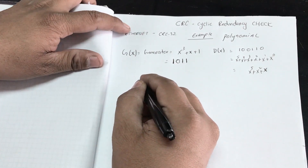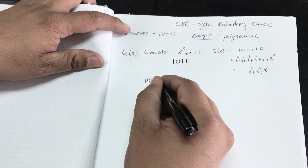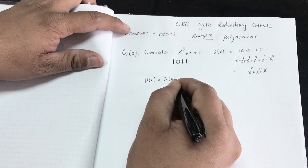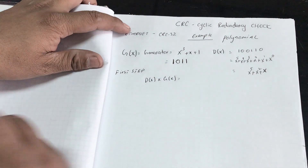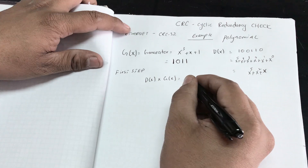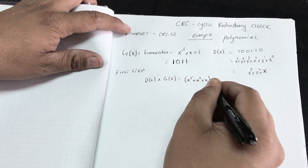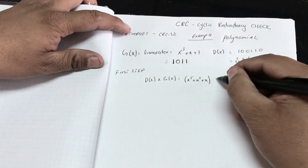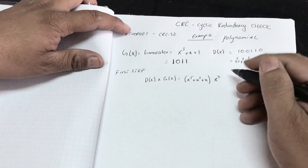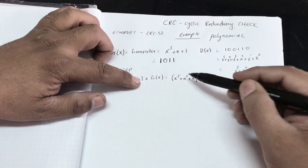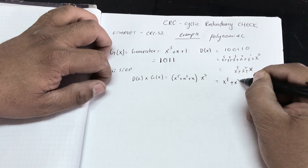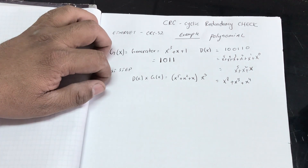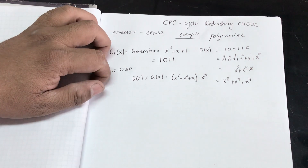The first step is to multiply our data D(x) by x³ — the highest degree of our generator G(x). Multiplying x⁵ + x² + x by x³ means adding powers, so we get x⁸ + x⁵ + x⁴. This is our shifted data.